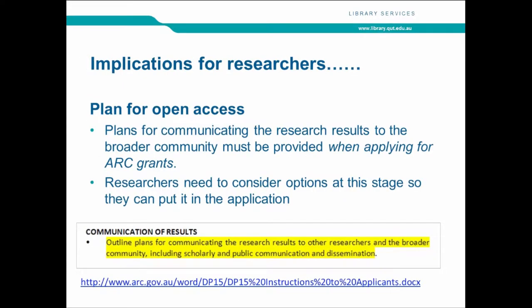The implications for researchers is that they really need to plan for open access right from the beginning — it's too late when they've actually published in a journal that won't support open access. They need to think about it upfront, at the application stage, because there is a section in the application called 'communication of results' where they're asked to outline plans for communicating research results to other researchers and the broader community.